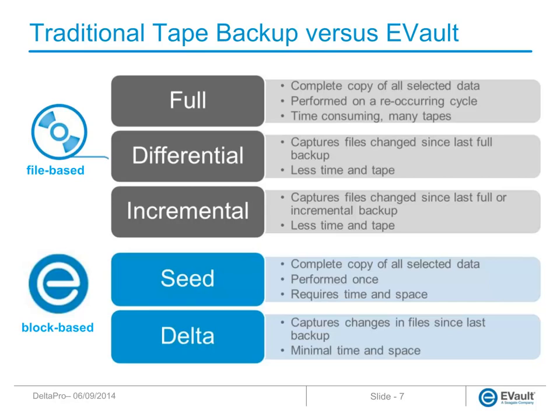eVault eliminates the complexity and waste of differential and incremental backups. The first backup is a seed backup which captures all the data. After the initial seed backup, only block-level changes are captured and sent to the vault, saving time, vault storage space, and network bandwidth. Restoring lost or damaged data is simple — you simply select which day you want to restore from, and the vault presents that data in its entirety without mounting or reading multiple backup tapes.